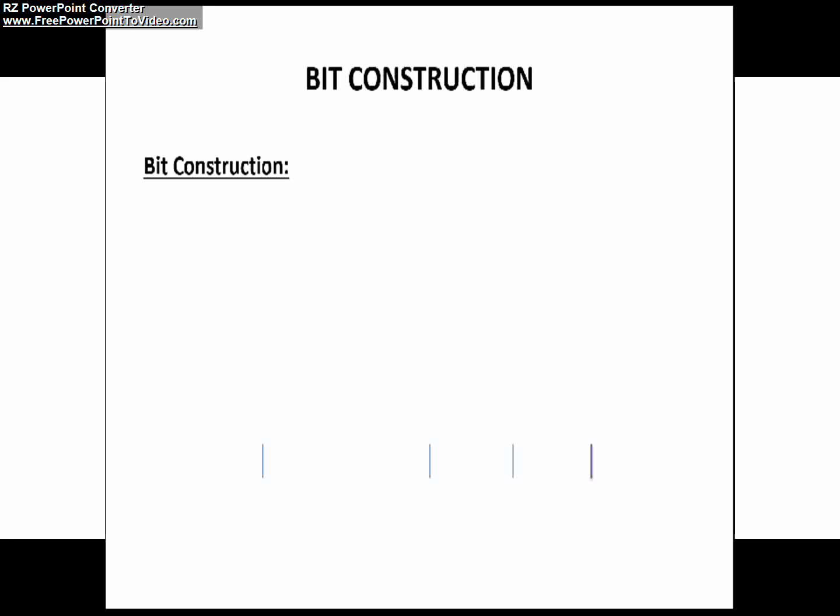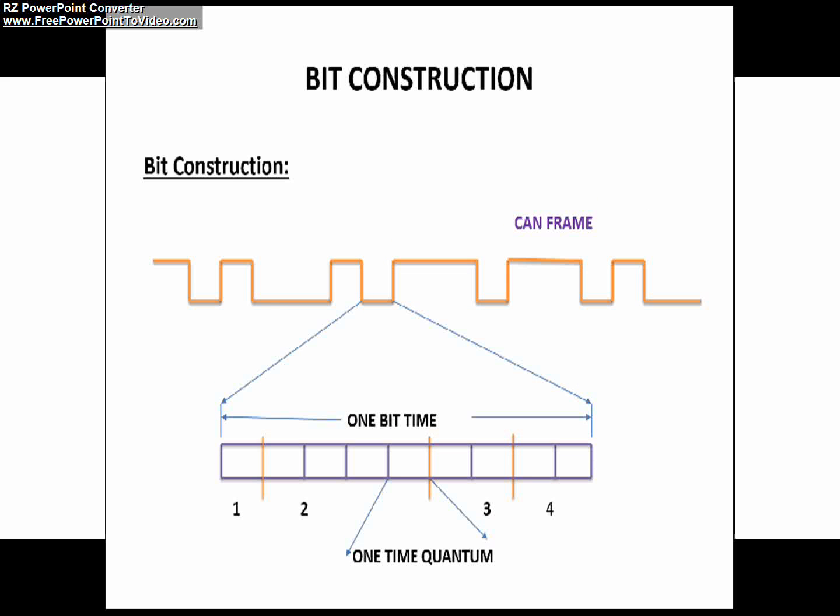Now we will see the bit construction of a CAN protocol. Here you can see in this slide, for example, I am considering a dominant bit. As I already said, a bit can be either dominant or recessive, but the construction of the bit should be in such a manner.